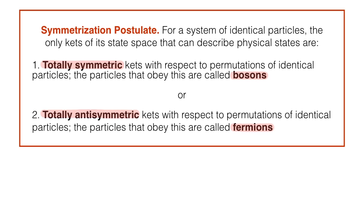Let's stop here for a moment. Does it make sense that systems of identical particles are described by these two types of state? We know that exchanging two identical particles doesn't affect the physics of the problem, and this is actually precisely what these states do. Bosons are particles described by totally symmetric states, for which exchanging any two particles leads to exactly the same state. Fermions are particles described by totally antisymmetric states, for which exchanging any two particles leads to the same state with an extra minus sign. This means that these states capture the necessary property of systems of identical particles: that exchanging any two particles should not affect the physics.